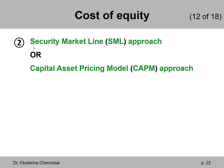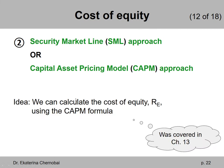The second approach is the Security Market Line, the SML approach, or you can call it the CAPM — Capital Asset Pricing Model approach. Here, we don't need to know the things required by the first approach, the dividend growth model. We don't need to know the dividend amount, today's stock price, or the dividend growth rate. Instead, we need a completely different set of information.